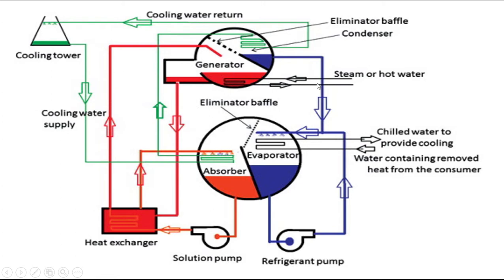In the generator, using an external source of heating such as steam, hot water, or solar heating, the weak solution is heated. Due to that heating, water vapor is separated from the weak solution. The water vapor enters the condenser side. Due to that separation of water vapor, a strong solution is collected in the generator. The strong solution returns back to the absorber.